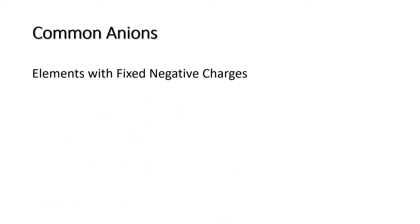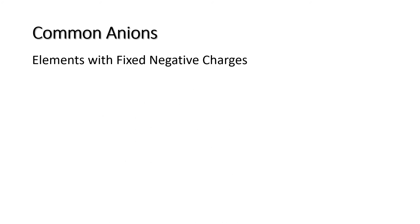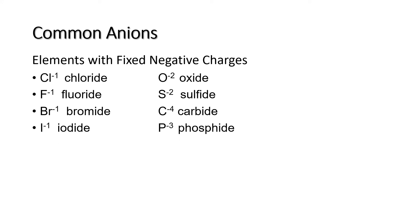Common anions — these are elements with fixed negative charges. For chloride, which is originally from chlorine, after gaining an electron it becomes chloride, written as Cl⁻¹, meaning it gained 1 electron. For oxide, as in our previous example, it gained 2 electrons and becomes negative 2. And for phosphorus, after gaining 3 electrons, it becomes negative 3 and the name becomes phosphide.